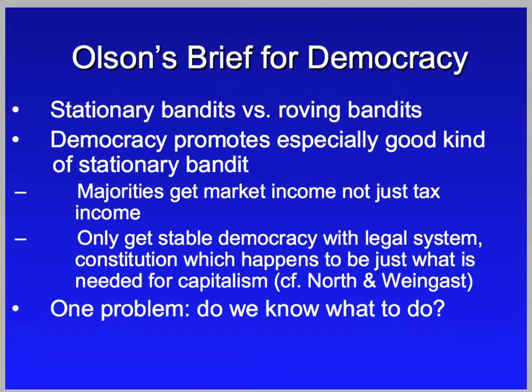Having developed that analysis, Olson turns to the idea that democracy might promote an especially good kind of stationary bandit. Any coherent state could at least potentially be a stationary bandit, and a democratic state might be a particularly favorable kind. He has two key arguments for this. First, a democracy is ruled by a majority, and that majority derives income not just from taxes but also from the market — abstracting from all the institutional details of democracy, of course.